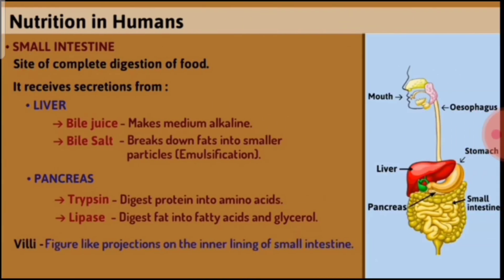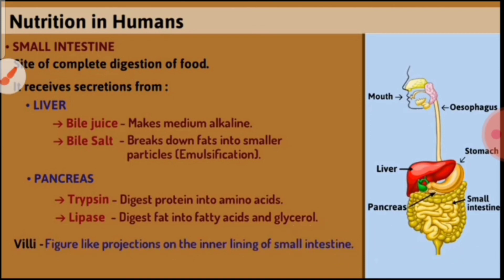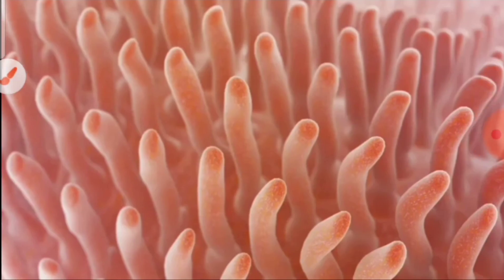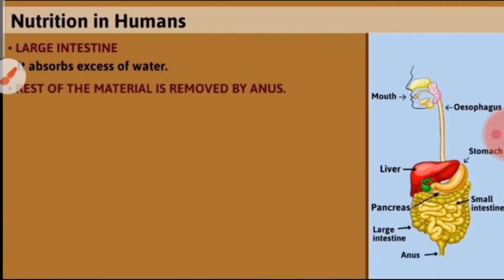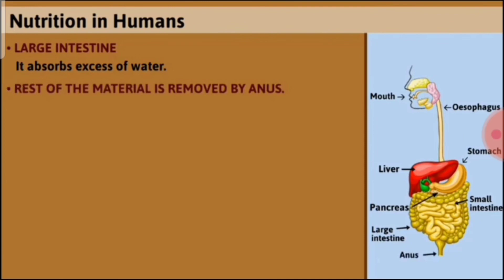In the small intestine we find villi, which are finger-like projections on the inner lining of the small intestine. These villi help in the absorption of digested food. The finger-like projections increase the surface area for absorption in the small intestine.